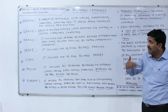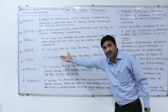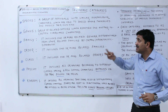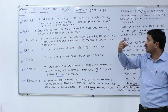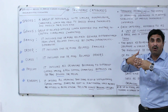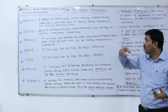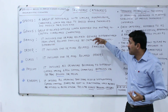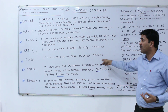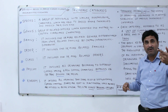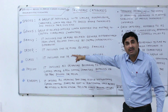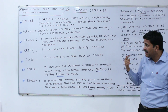The next higher taxonomic category is the order. An order includes one or more related families — one or more related families together form an order. Moving higher, many orders combine together to form the next taxonomic category, which is the class. The class includes one or more related orders.